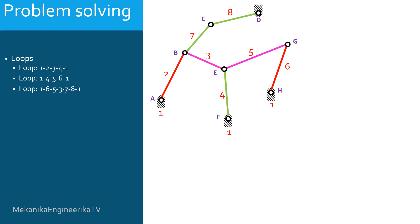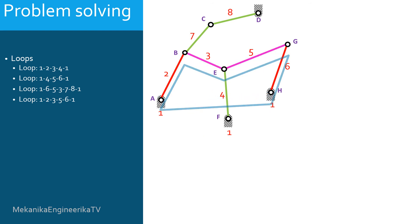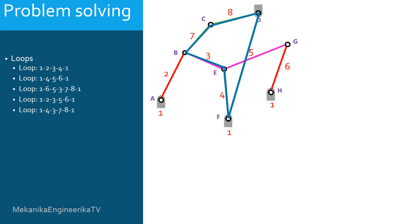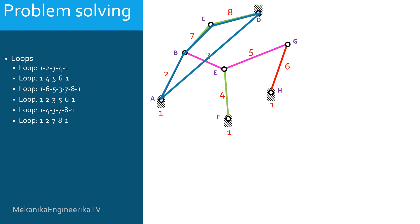There are more than these 3 loops. There is the loop built from links 1, 2, 3, 5, and 6. There is the loop built from links 1, 4, 3, 7, and 8. There is the loop built from links 1, 2, 7, and 8. Only 3 loops are required. Any 3 loops that involve, together, all links can be used to write the vector loop equations. We will choose the first 3 loops as they involve all 8 links.